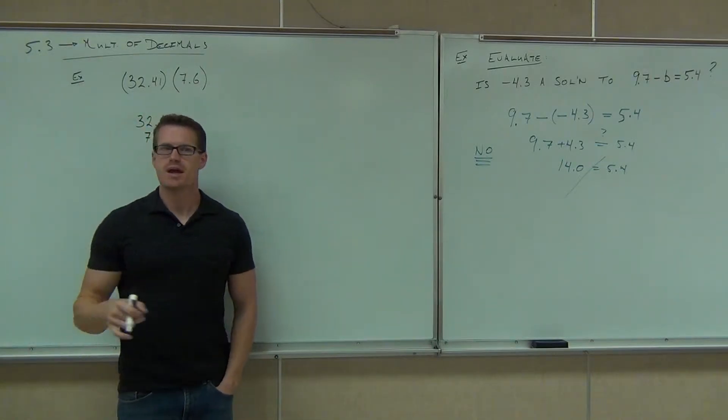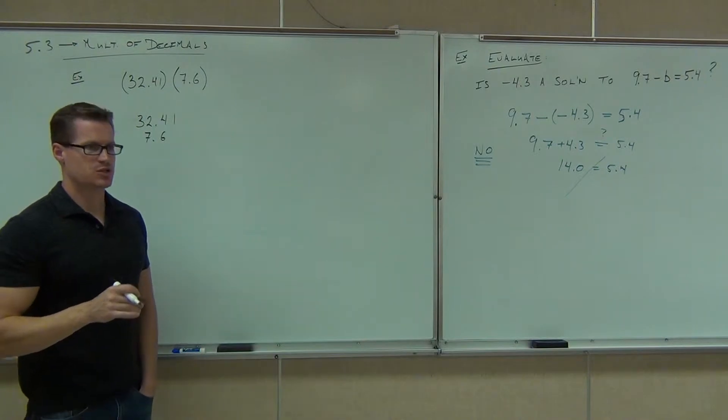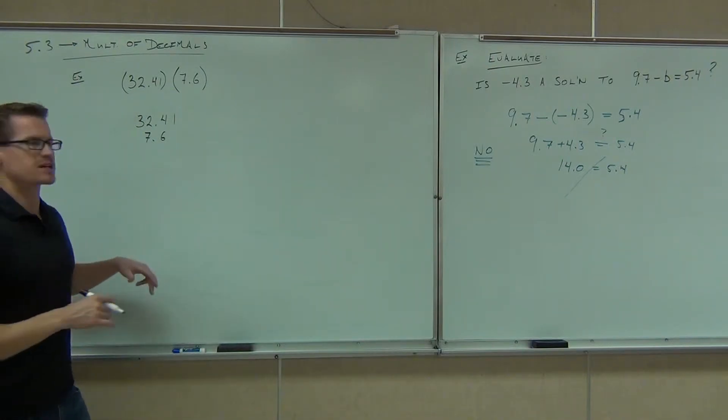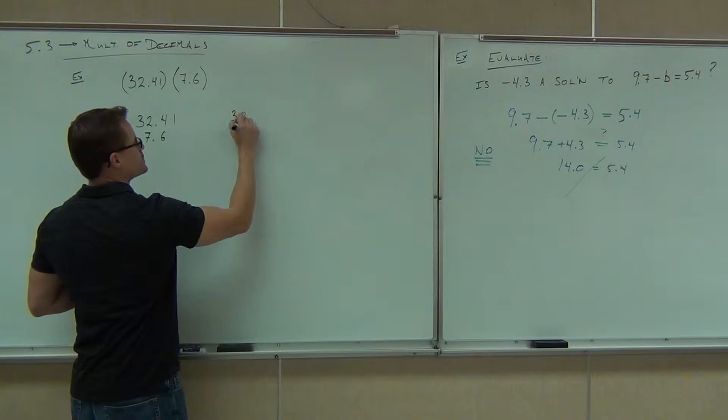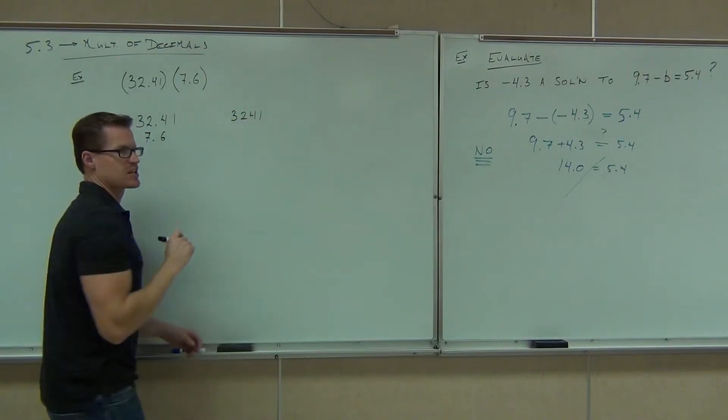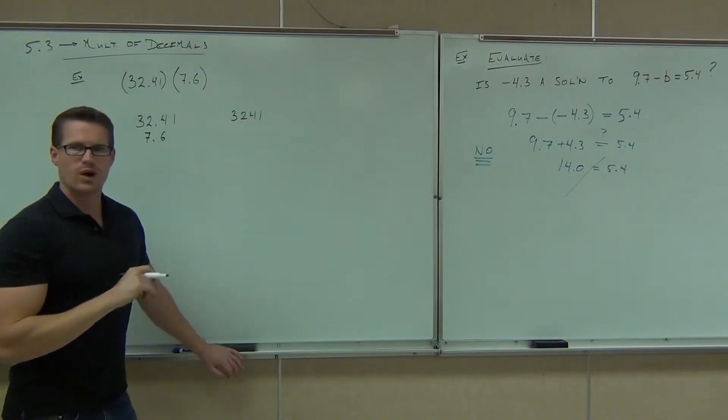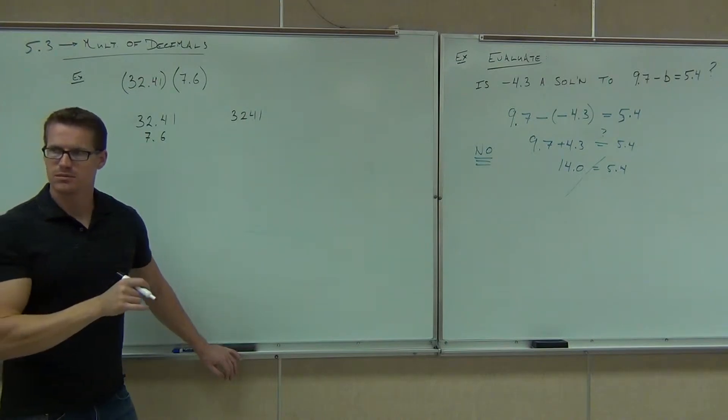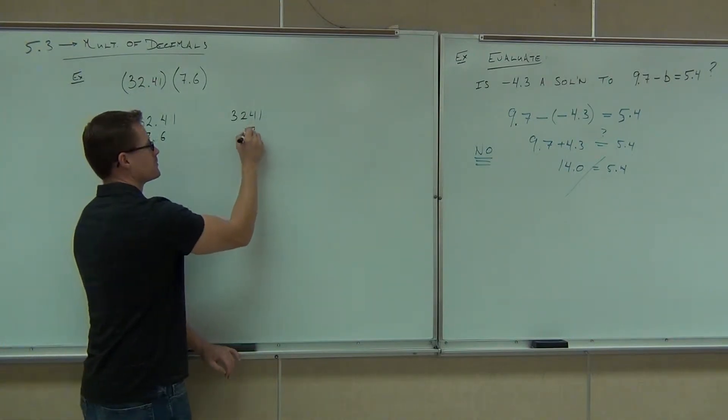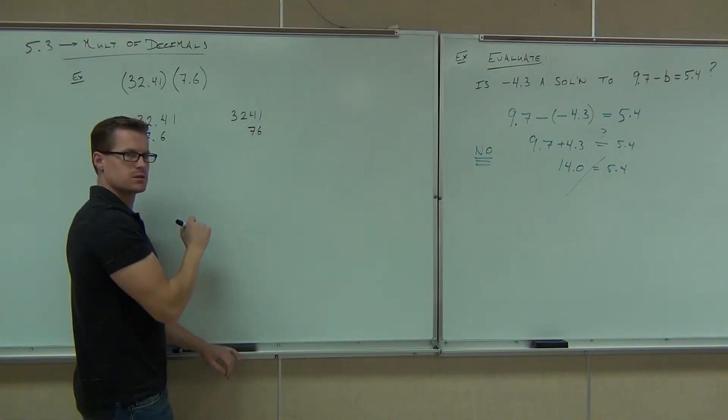But I want you to look at something. If you imagined this, check it out. Imagine these numbers without the decimal. You'd have 3, 2, 4, 1, and you would have 76, right? Where would the 76 go? Below 4 and 1. It'd go like that, wouldn't it? Yeah. And you'd multiply.